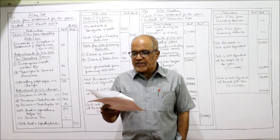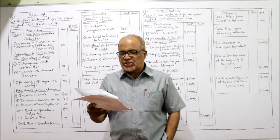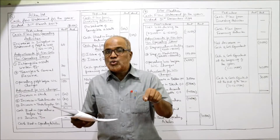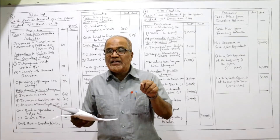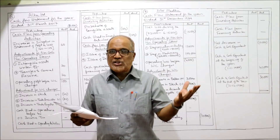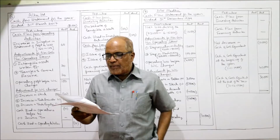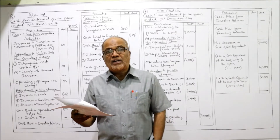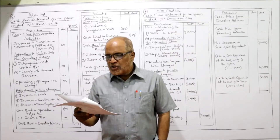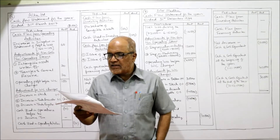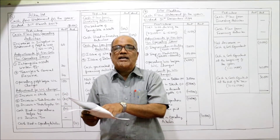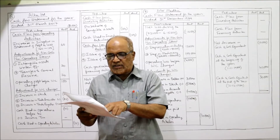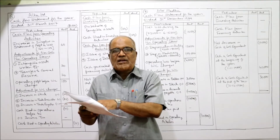I'm reading out the sixth problem: from the following balance sheets pertaining to Alka Limited as at 31st March 2016 and 2017 — the current year is 2017 and 2016 data is also given — you are required to prepare the cash flow statement. The two balance sheets are given in vertical form. Share capital: last year 200, current year 300 — issue of shares is a financing activity.